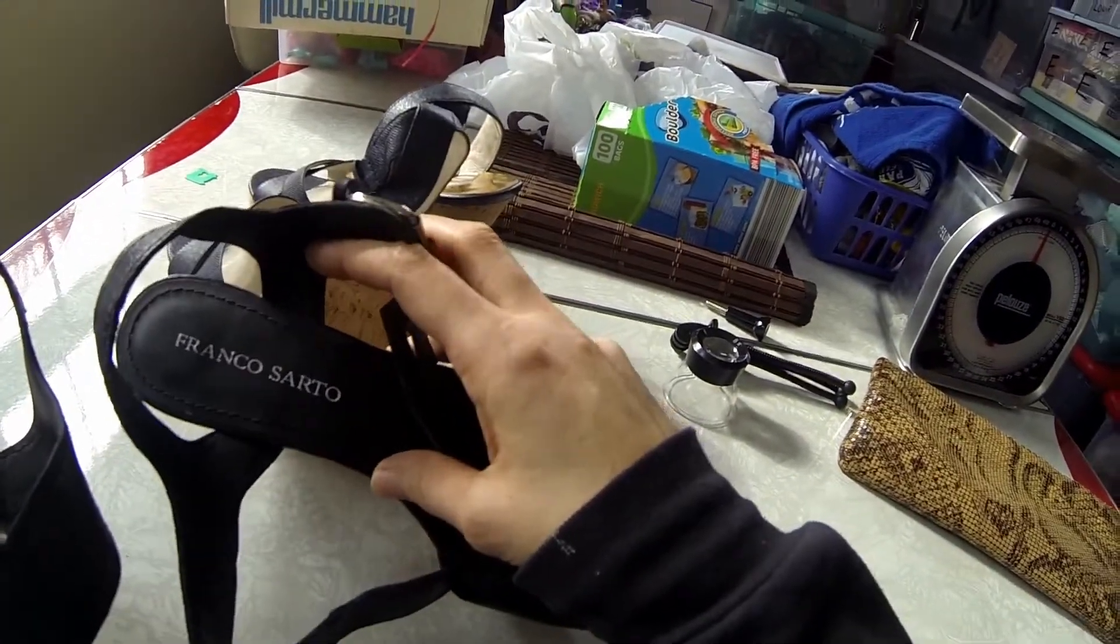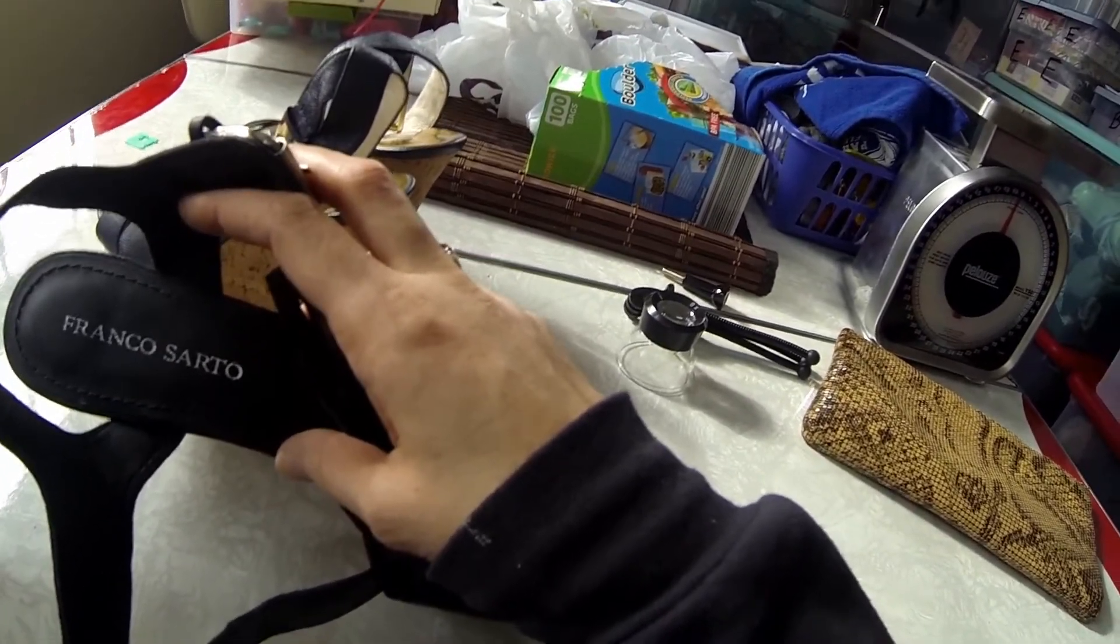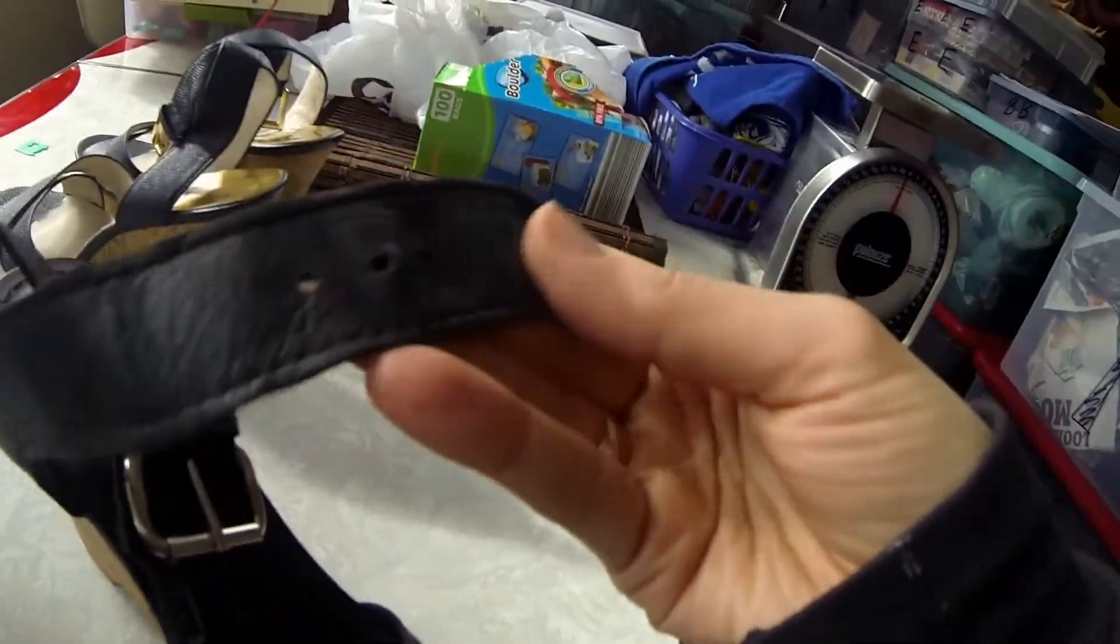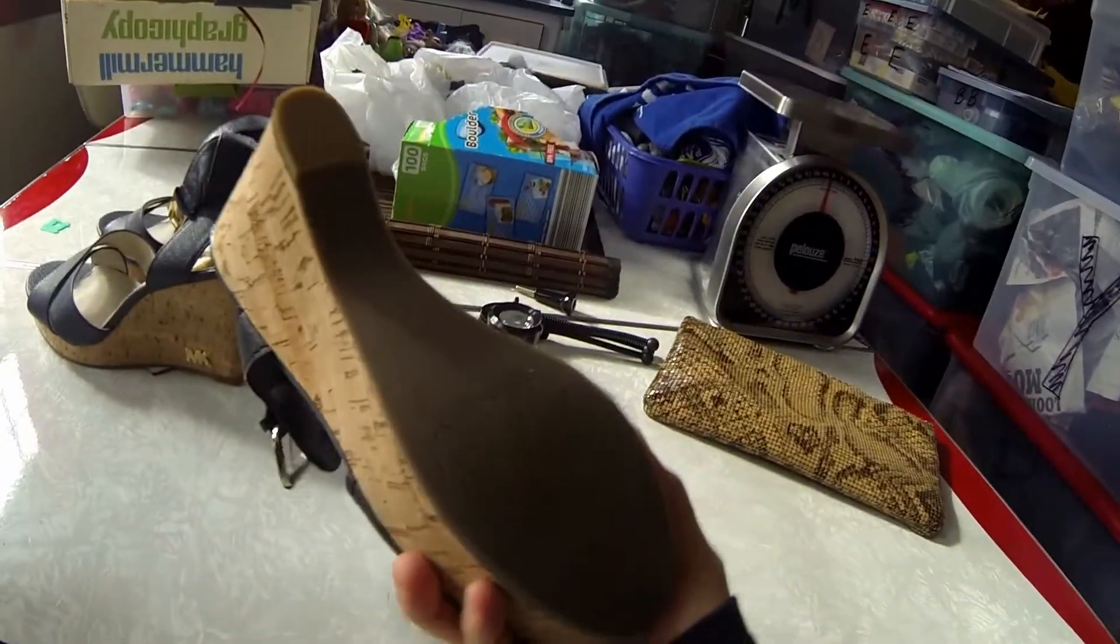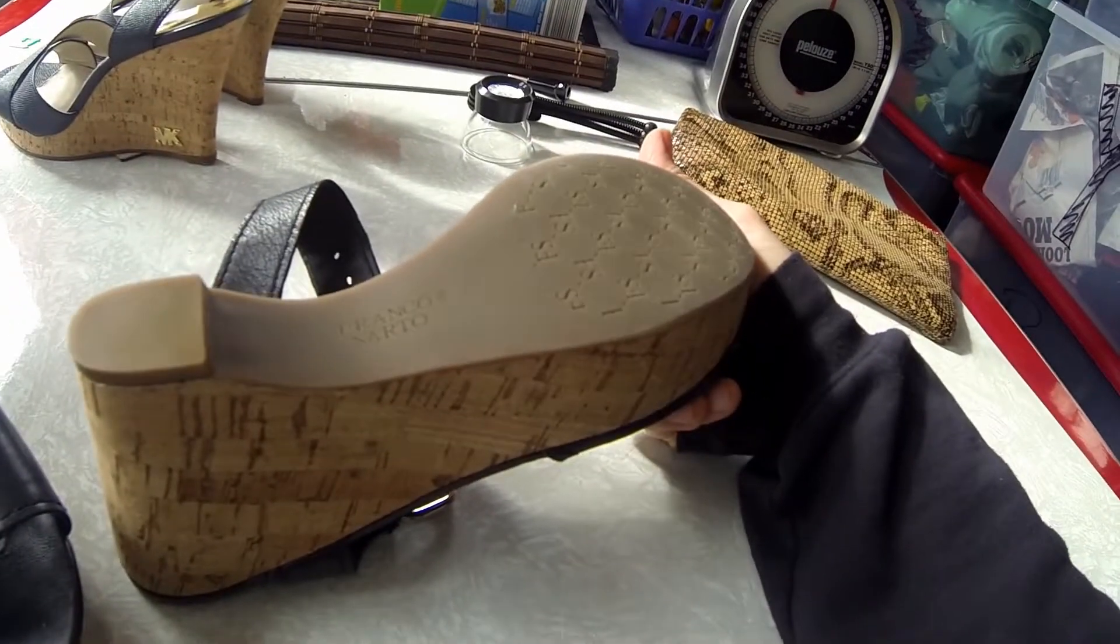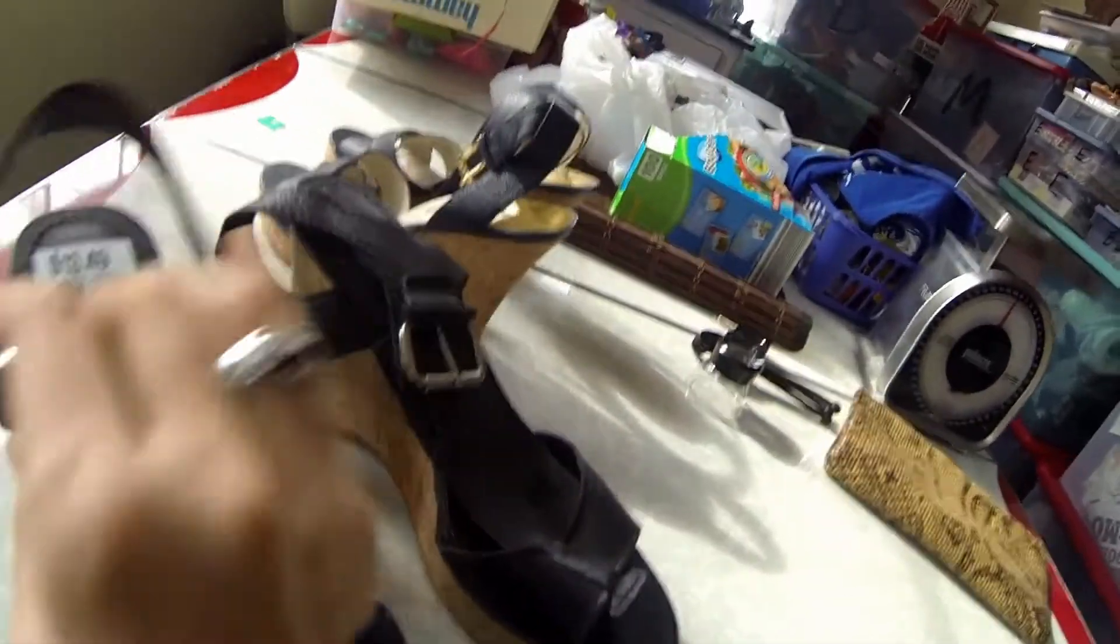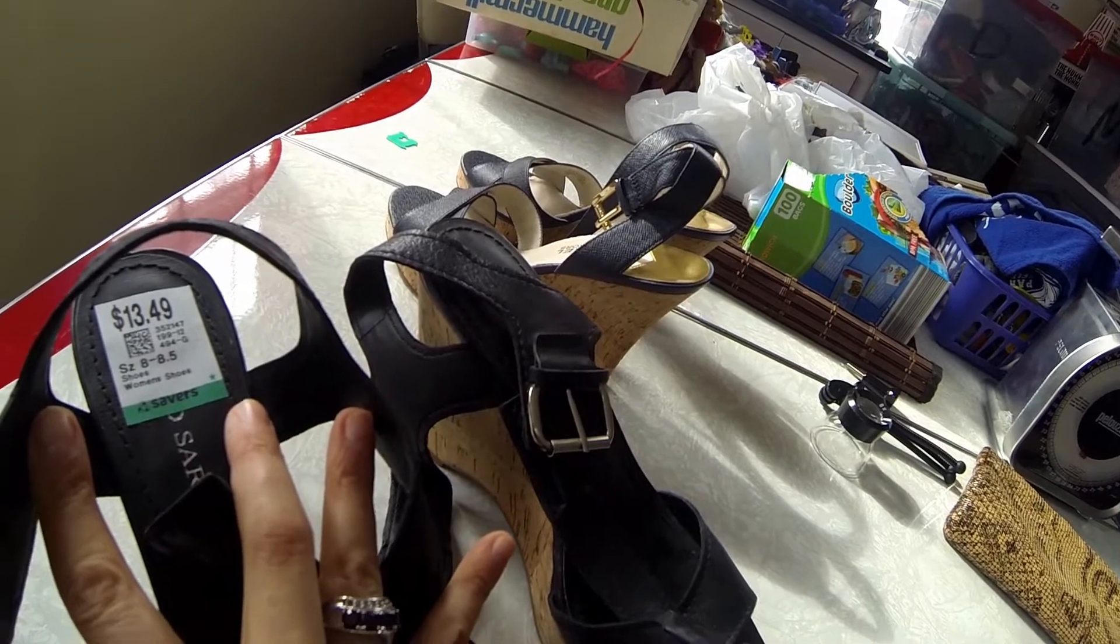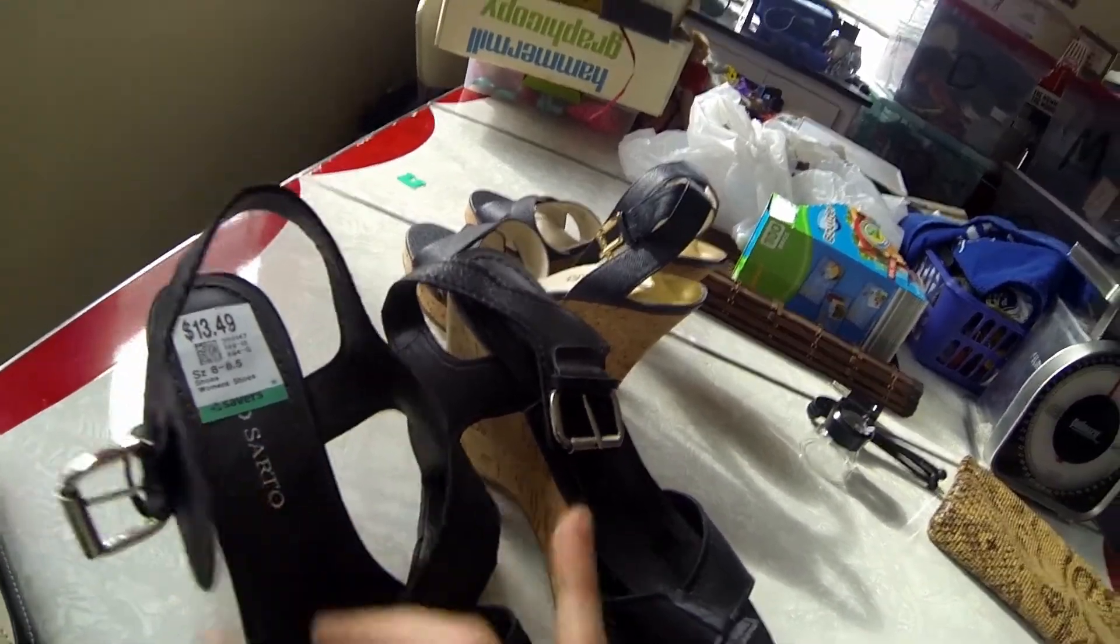So this is a Franco Sarto. When I see Franco Sarto shoes at TJ Maxx or Marshalls, they're like $40 and $50 brand new. These look like they were worn a little bit. They're leather, but they're real clean. Those might have been worn once. I mean, look how clean the soles are. And I think these are a size 8. So I paid 50% off of $13.49. So I paid like close to $7 for that, around that price.